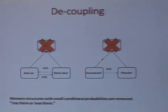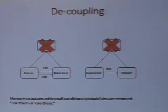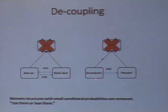This will all develop automatically. We also have a rule of forgetting, or decoupling. Memory structures with small conditional probabilities will be removed. For example, if you see a red car and a black bird at the same time, this structure may form, but since they will turn out to be independent of each other, it will disappear eventually. Similarly, if you swear and then hear thunder, that association will also disappear eventually, because it's a false causal relation.